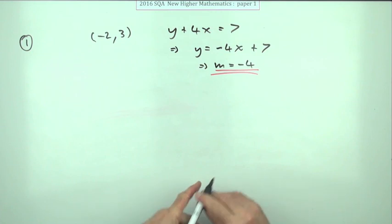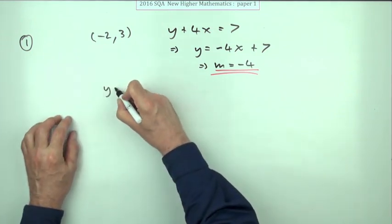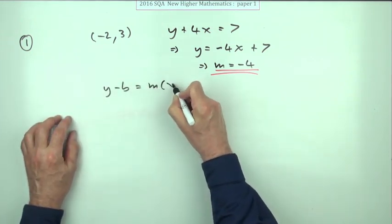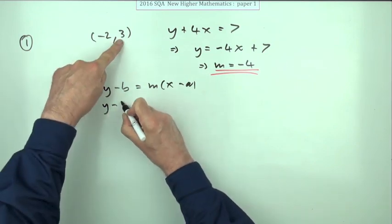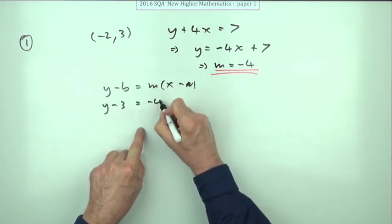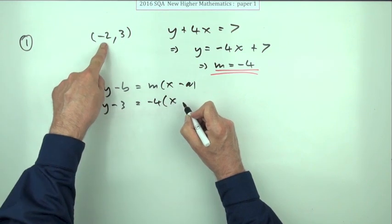So feeding that and the point it passes through into y minus b equals mx minus a. You'll have y minus the y coordinate as the gradient negative 4 times x minus the x coordinate.